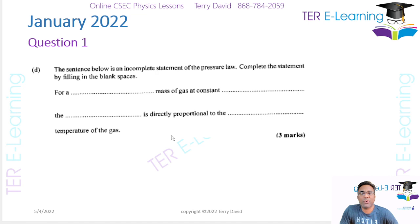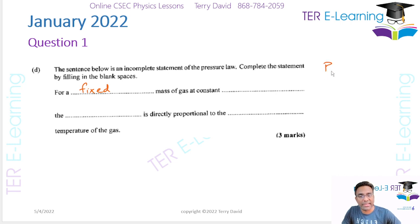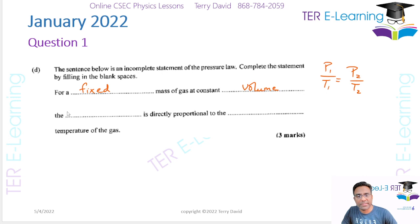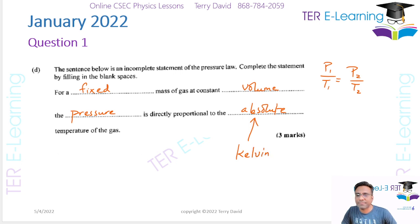Part D says the sentence below is an incomplete statement of the pressure law - complete the statement by filling in the blanks. The pressure law looks like this: P1 over T1 is equal to P2 over T2. In this case your volume is being kept constant, so for a fixed mass of gas at constant volume, the pressure is directly proportional to the absolute temperature. The word 'absolute' tells us that we are using the Kelvin scale.